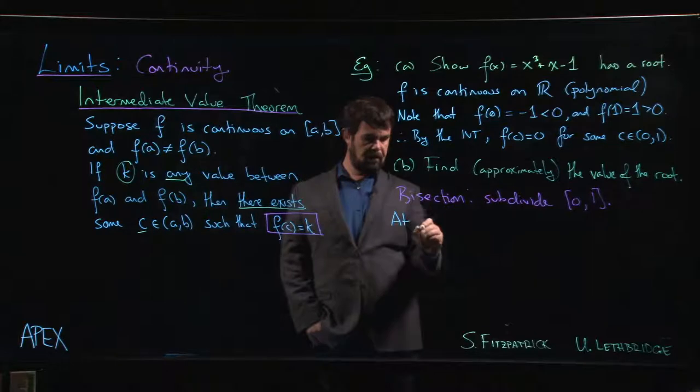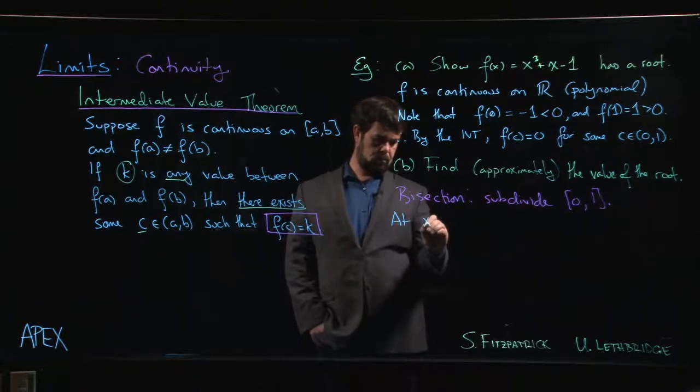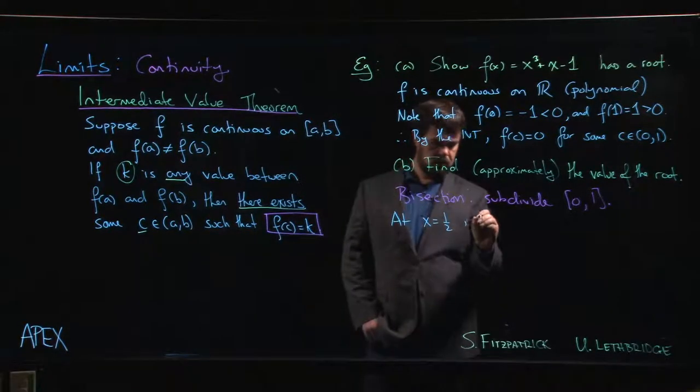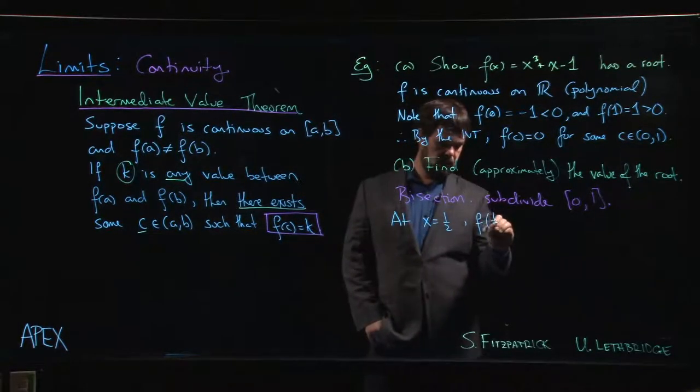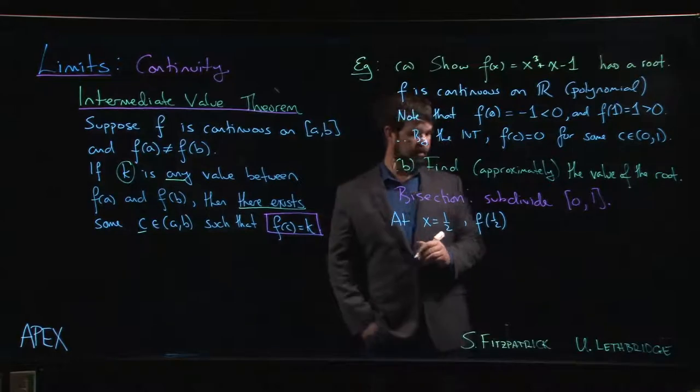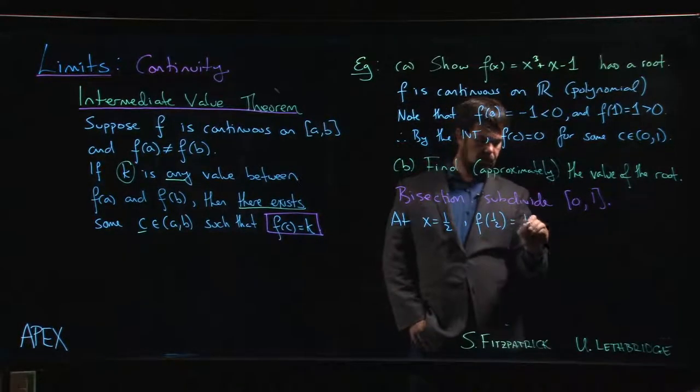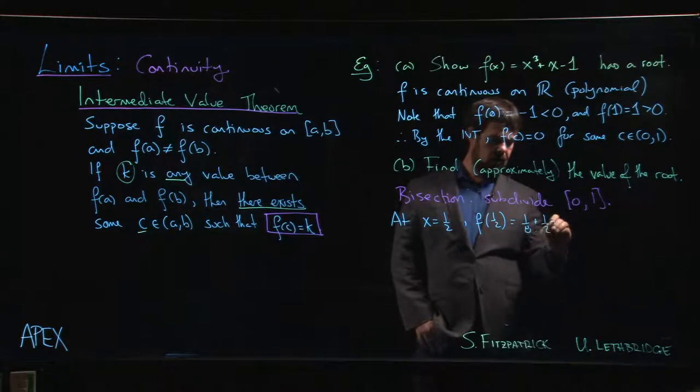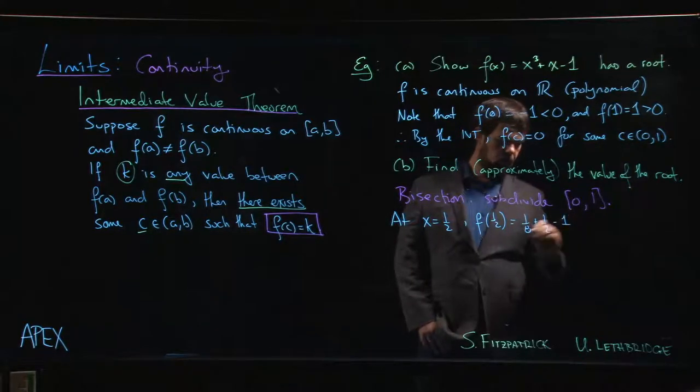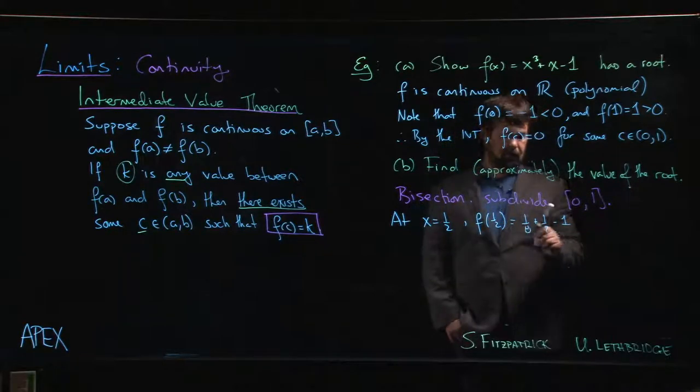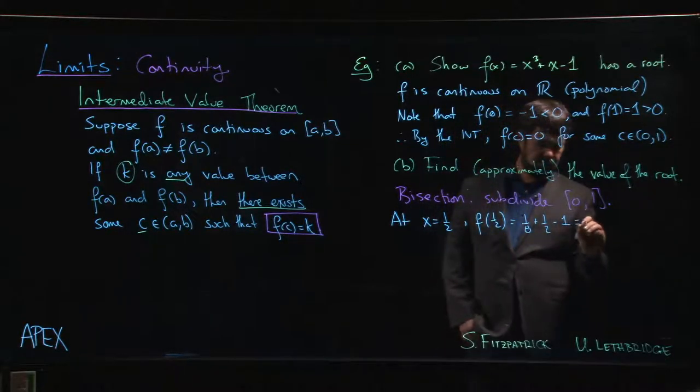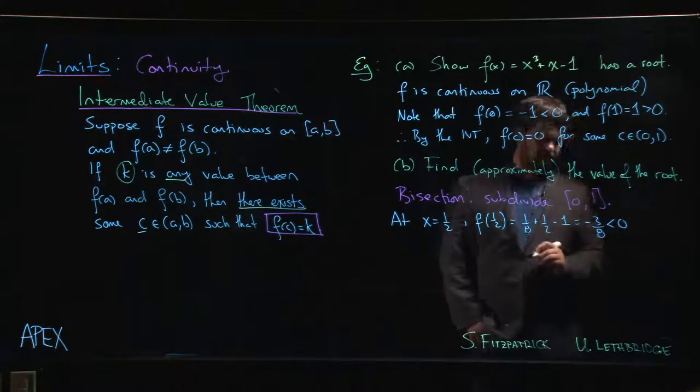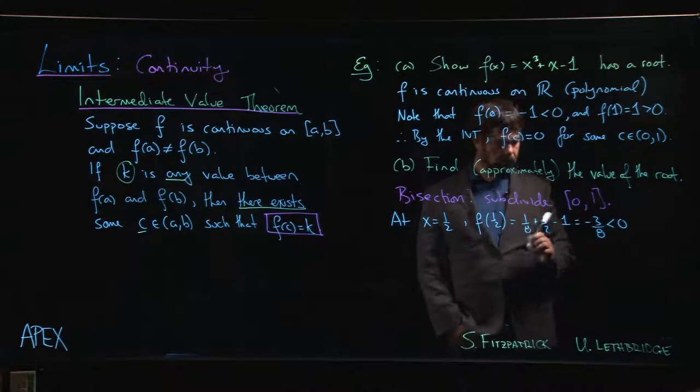At one-half or 0.5 if you like, we have f of one-half is going to be, so half cubed is one over eight plus one-half minus one. So one-eighth plus four-eighths minus eight-eighths is minus three-eighths, which is less than zero.